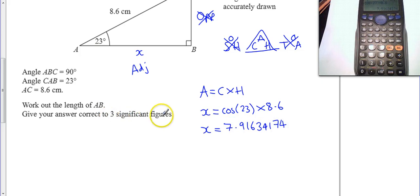It says, as always, 3 significant figures. So for me, X is roughly 7.91. I want to keep the 1, but the 6 rounds it up. 7.92, 3 significant figures.